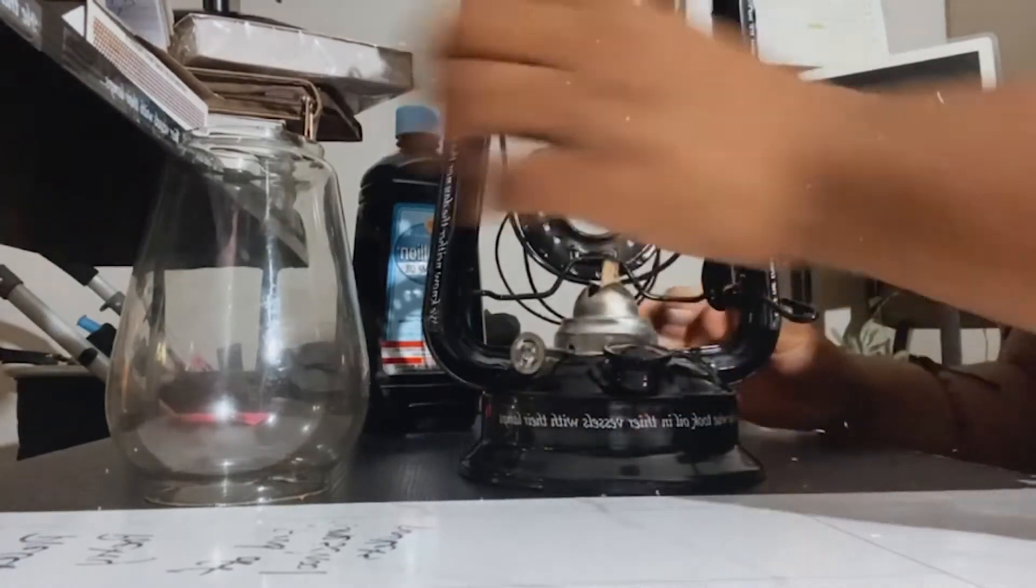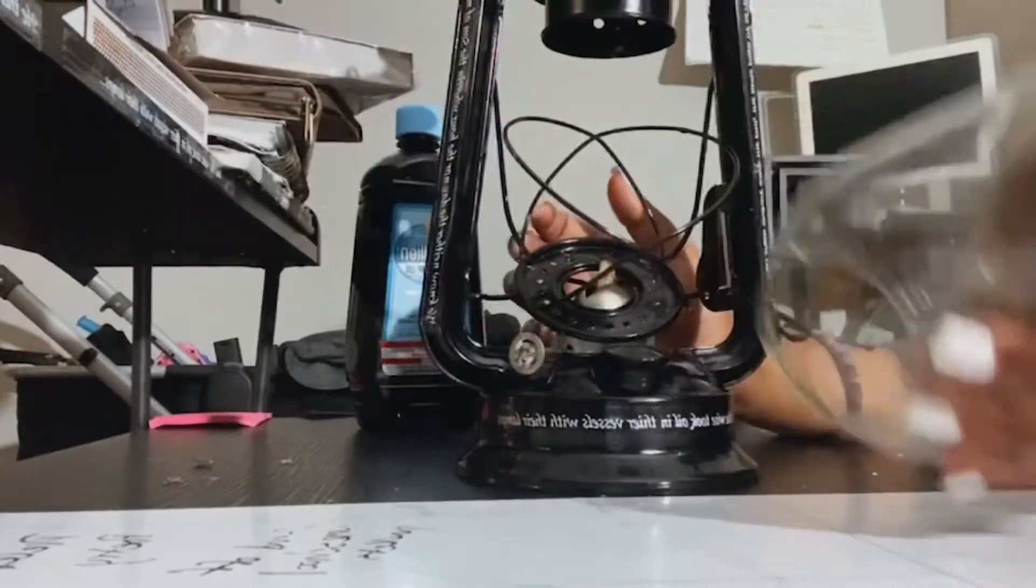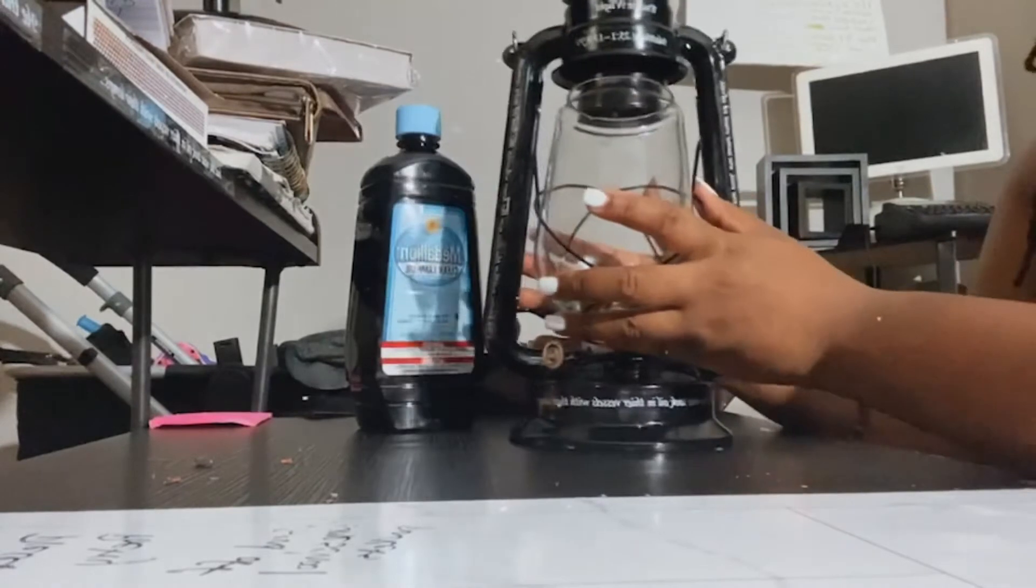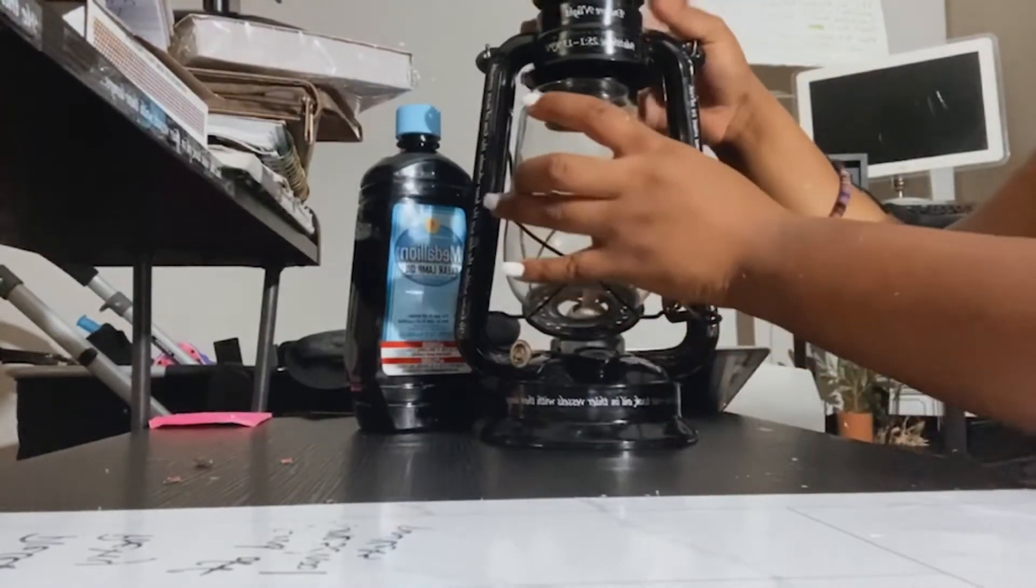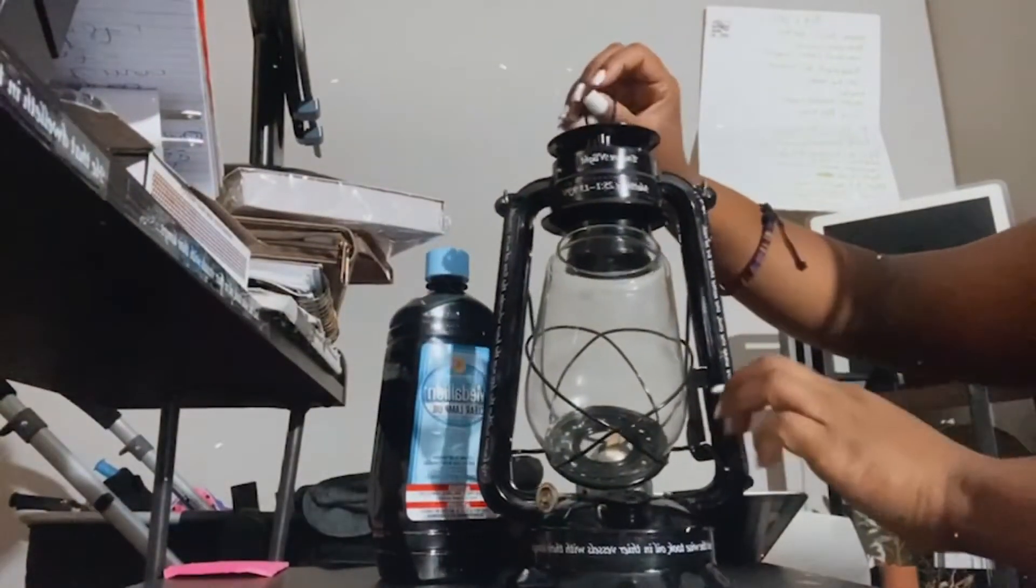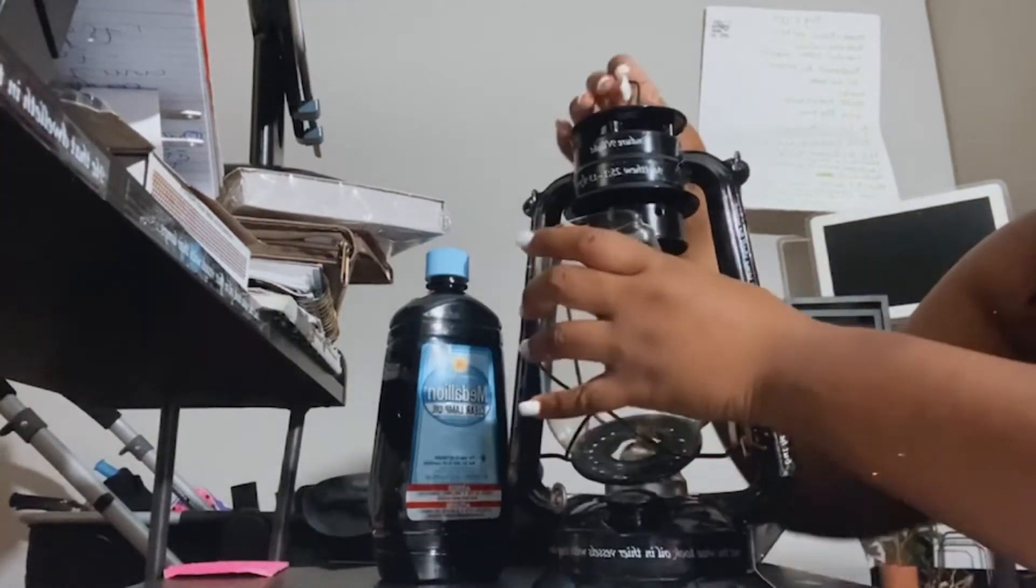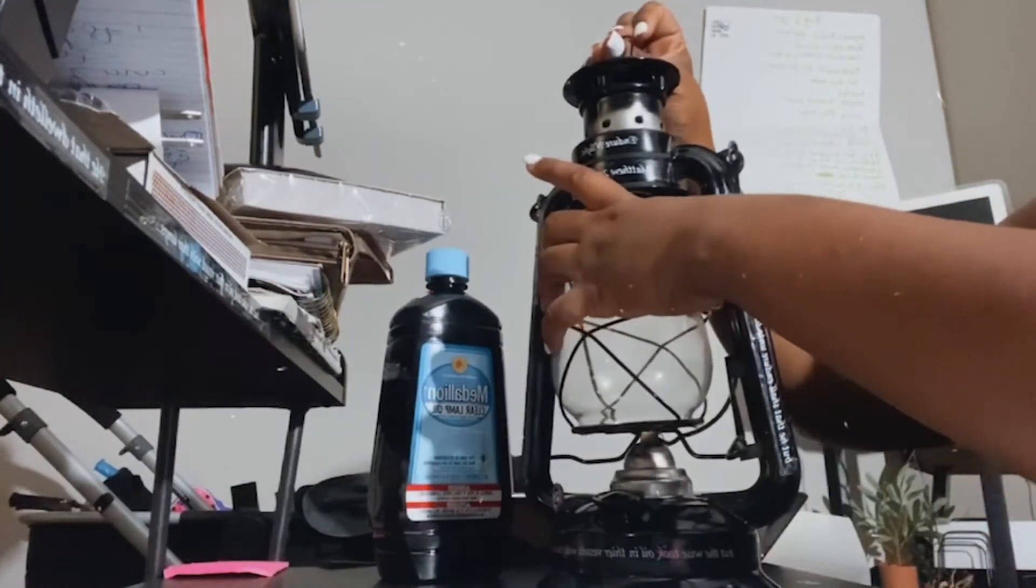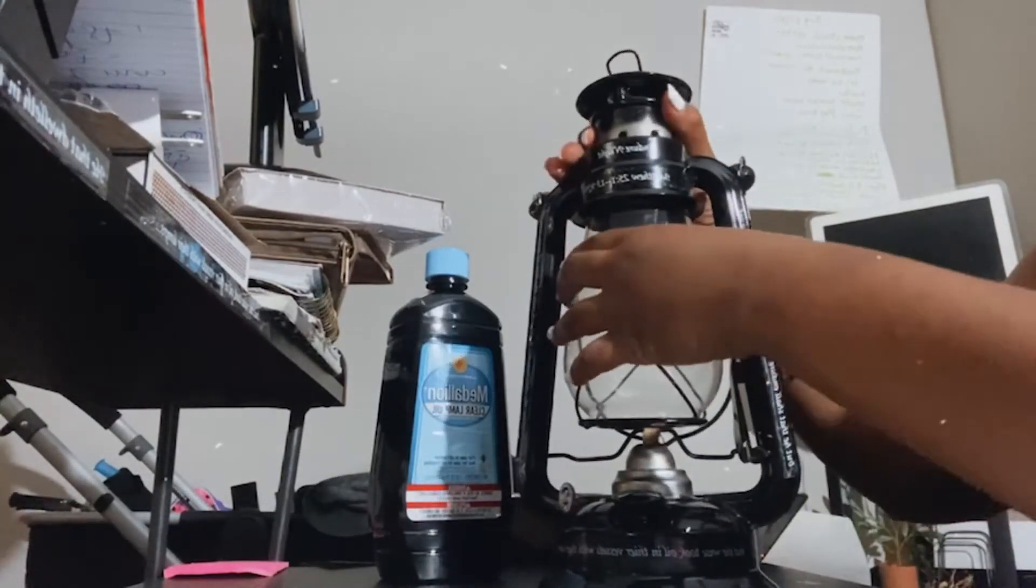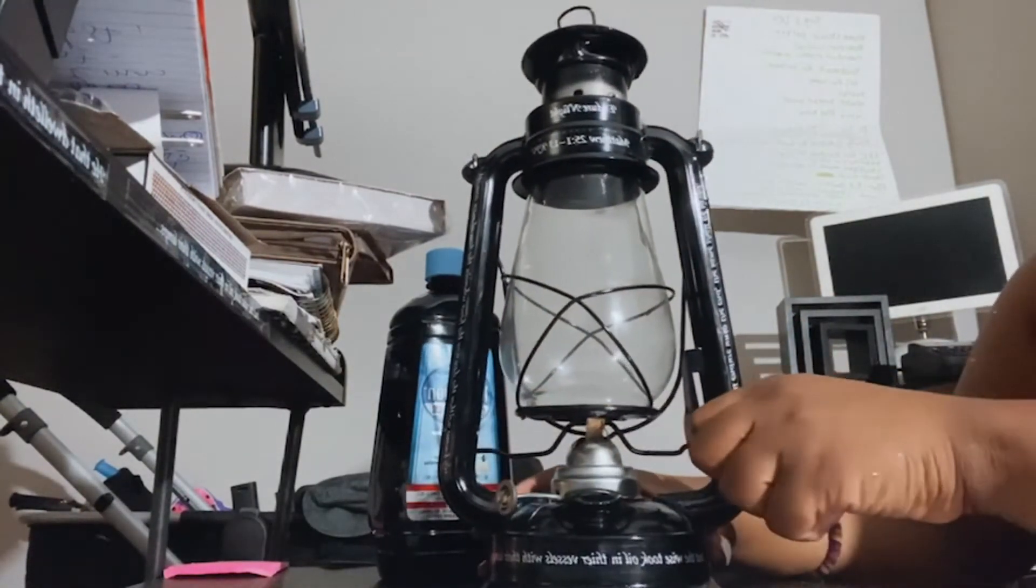We will place the globe and lift this back up. So you'll pull this up, the chimney, at the same time it's pushing this globe back. And then you'll lift this up and put it back down.